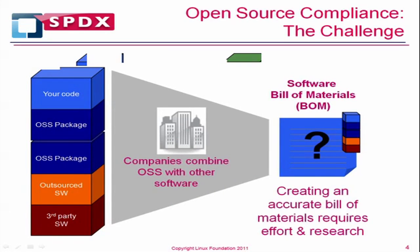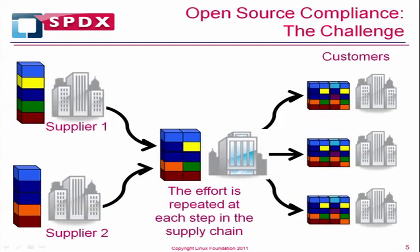Companies combining packages of software are being pressured by their supply chain customers to provide software bills of materials that accurately describe what's inside the package and the licensing. And because in a complex supply chain, many companies are both suppliers and customers, this work is often repeated along the way.